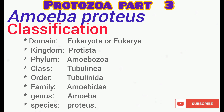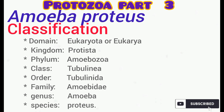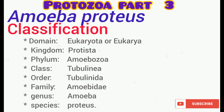Let's talk about the classification of Amoeba proteus. In the latest classification, the highest hierarchy is the domain, and Amoeba is placed under domain Eukaryota, kingdom Protista, phylum Amoebozoa. The full classification is displayed on the screen.